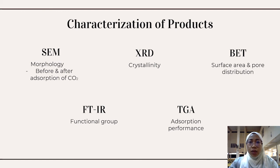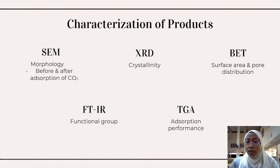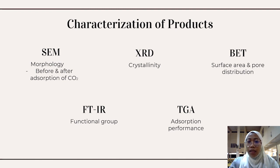The synthesized product will undergo characterization using several methods. First, scanning electron microscopy (SEM) will identify the morphology of the product before and after absorption of carbon dioxide. Next, X-ray diffraction (XRD) will identify the crystallinity of the product. BET analysis will identify the surface area and pore distribution of the synthesized material. FTIR will identify the functional groups present in the material. Finally, thermogravimetric analysis (TGA) will identify the absorption performance of the material after carbon dioxide absorption.